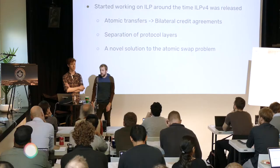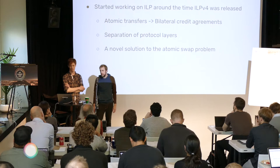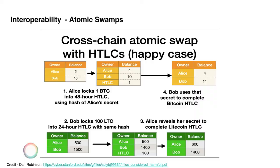There's a nice separation of protocol layers in ILP that resembles the internet, which makes it easier to build on and makes coming to standards and stabilizing them a lot easier — I think that's already paid off. And then it's a novel solution to the atomic swap problem, which we're going to talk about for a second.